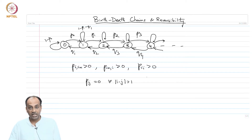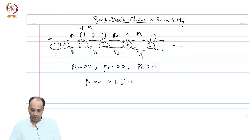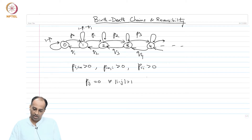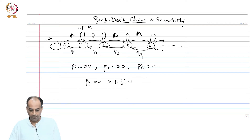You cannot jump from state 3 to state 1 or state 4 to state 1 — that is not allowed in a birth-death chain. A Markov chain with this structure is called a birth-death Markov chain. The name comes from the fact that transitions from i to i+1 can be thought of as a birth in the population, and a transition from i+1 to i can be thought of as a death.